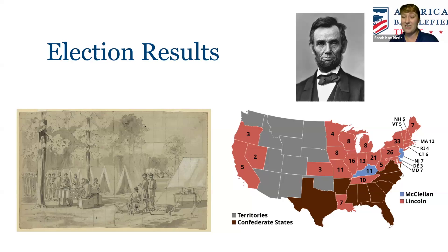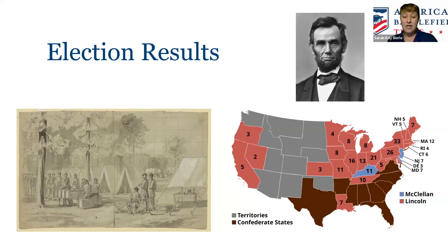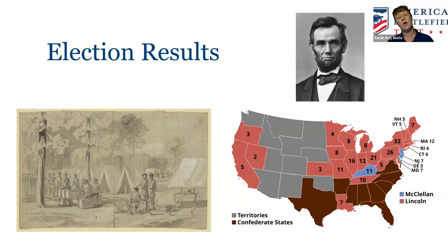McClellan got only three states' electoral votes — Kentucky, Delaware, and his home state of New Jersey — and not many soldier votes either. Lincoln's second inauguration took place in March 1865, and then just weeks later he was killed by assassin John Wilkes Booth at Ford's Theater, dying on April 15, 1865. His vice president Andrew Johnson became president, and his presidency played out in the tense period of the beginning of Reconstruction. A lot was at stake in the 1864 election, with big results.